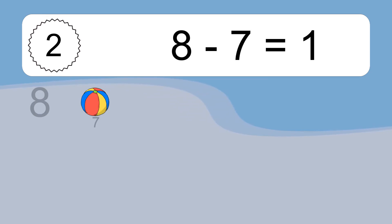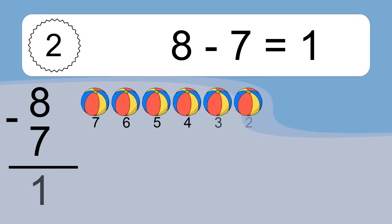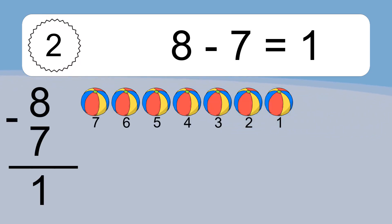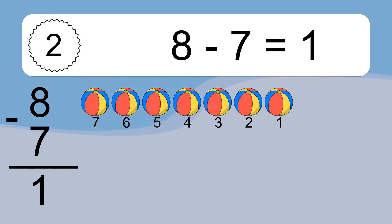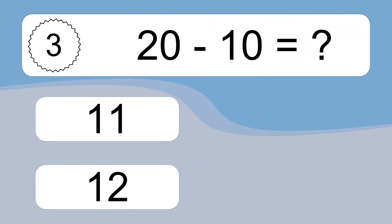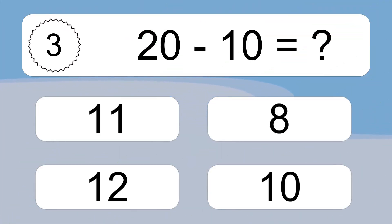8 minus 7 equals what? 8 minus 7 equals 1. Let's count it: 7, 6, 5, 4, 3, 2, 1.